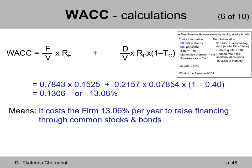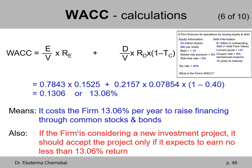Going one step further beyond what the problem asked: if this firm is considering a new investment project, it should accept the project only if it expects to earn no less than a 13.06% return. Otherwise, the project won't be profitable enough and the firm won't have enough money to compensate its investors.